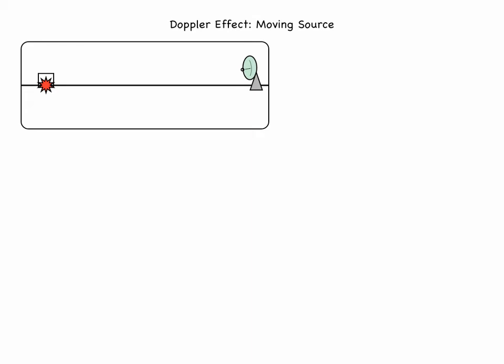Let's consider a source that emits not our typical sine waves, but sound bleeps periodically every t seconds. It will be easier to visualize what is happening if we use bleeps. Emitting periodic bleeps looks like a square wave. Here you can see the initial and subsequent bleeps traveling toward the detector with the velocity equal to the velocity of sound.